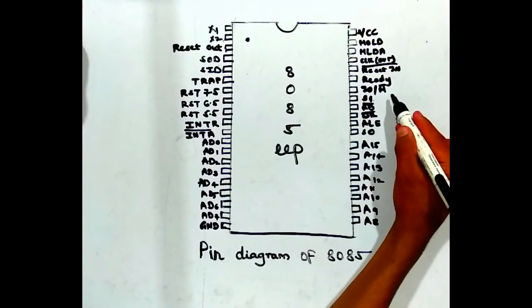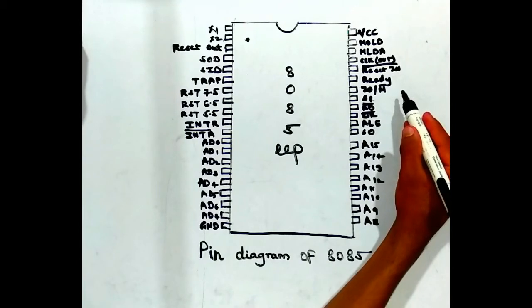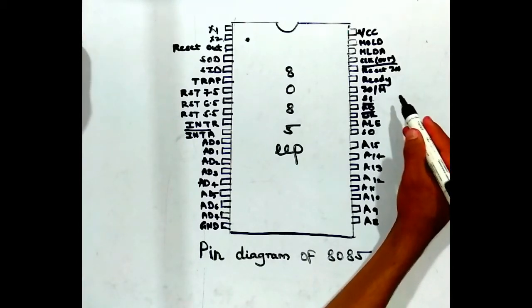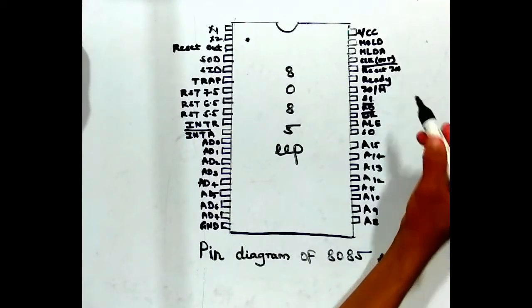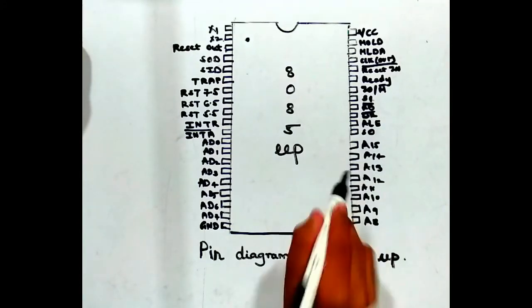The 34th pin is IO/M bar, which stands for input-output memory. This is an output status signal used to give the status of operations performed with memory or input-output by the microprocessor.